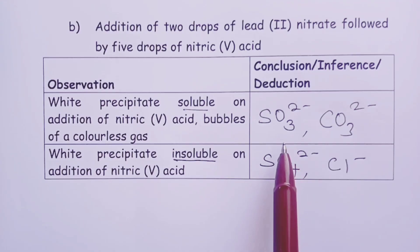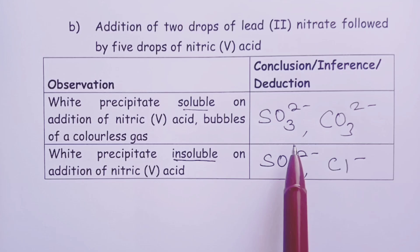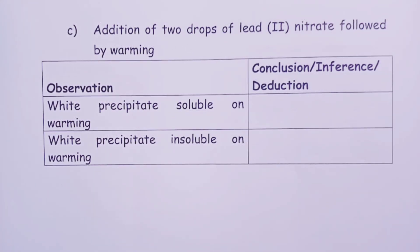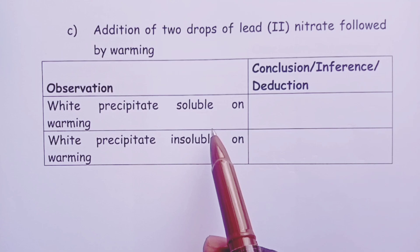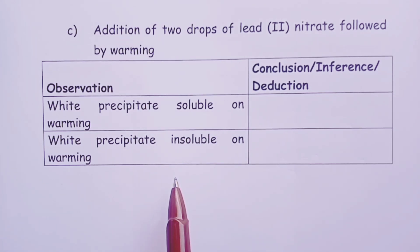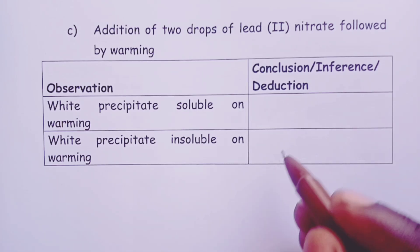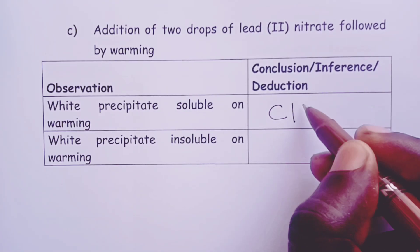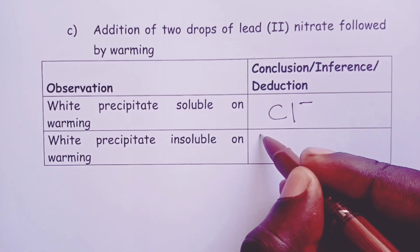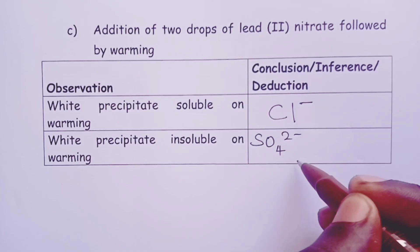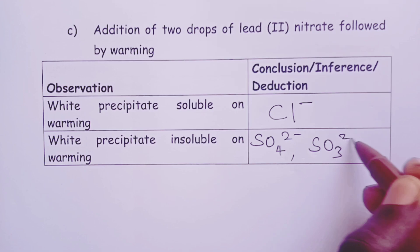The third possible instruction advises the learner to add lead-2 nitrate followed by warming — slight heating over a Bunsen flame. Two sets of observations arise. One, the white precipitate is soluble on warming, indicating the lead salt that dissolves in warm or hot water, which is lead chloride — so the anion present is chloride. Two, if the white precipitate is insoluble on warming, then the other three anions are present: sulfate, sulfite, and carbonate.